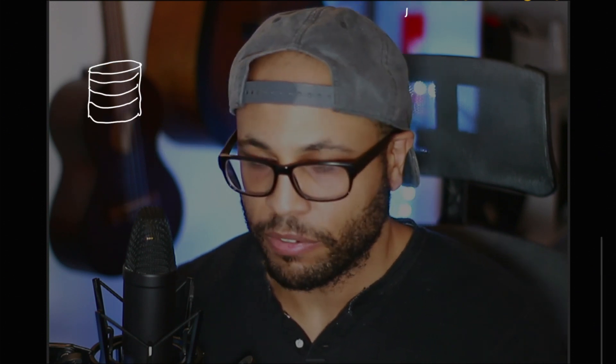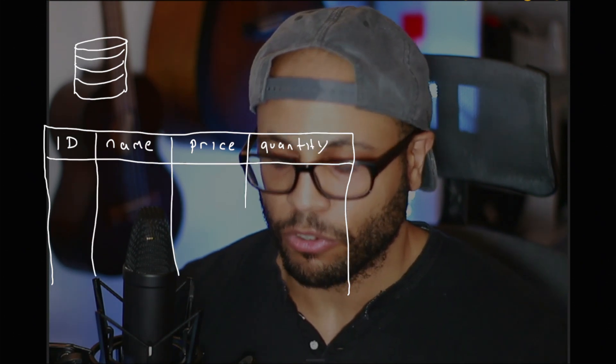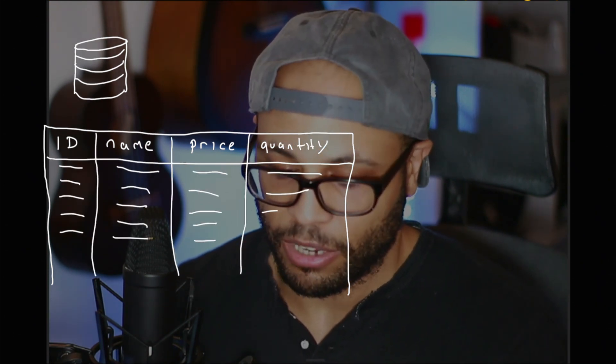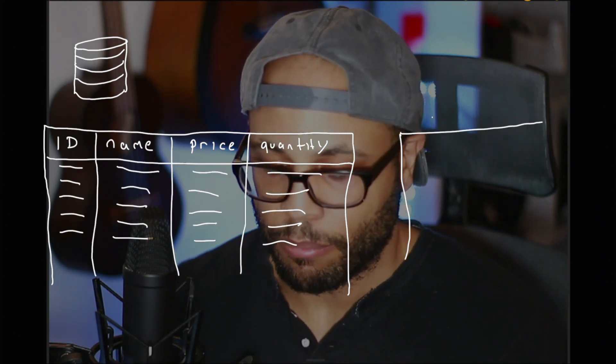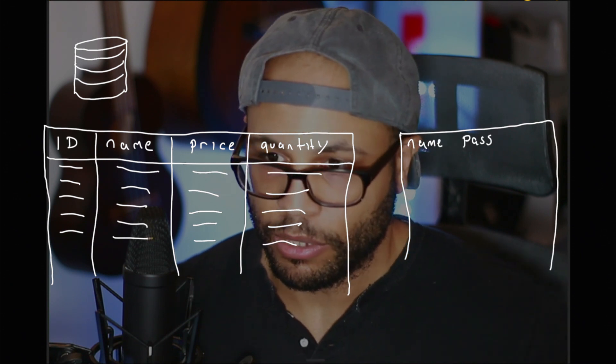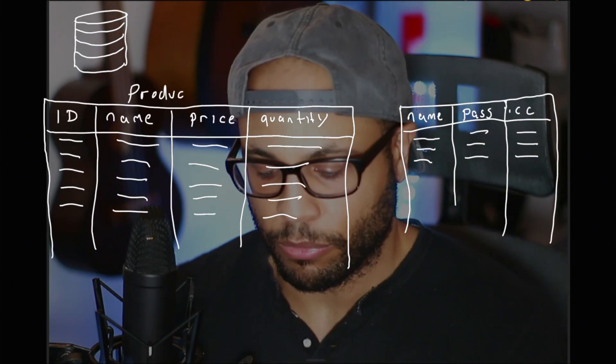In the database, data is grouped by tables, and each table contains rows and columns. So an application like this may have a products table, and it may also have a users table.